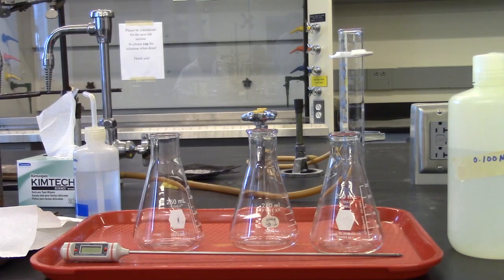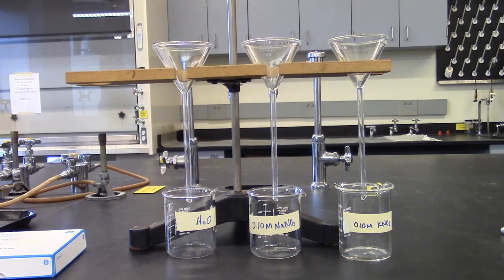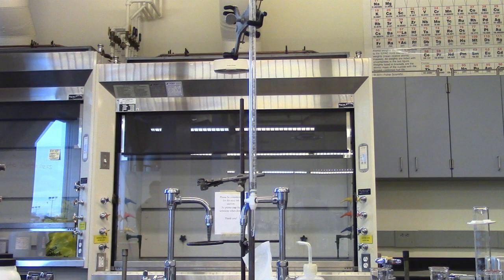For this experiment you will need the following: 100 ml graduated cylinder, three 250 ml Erlenmeyer flasks, and a thermometer. You will need a ring stand, a funnel support, three beakers, three funnels, and you will use a 50 ml burette.